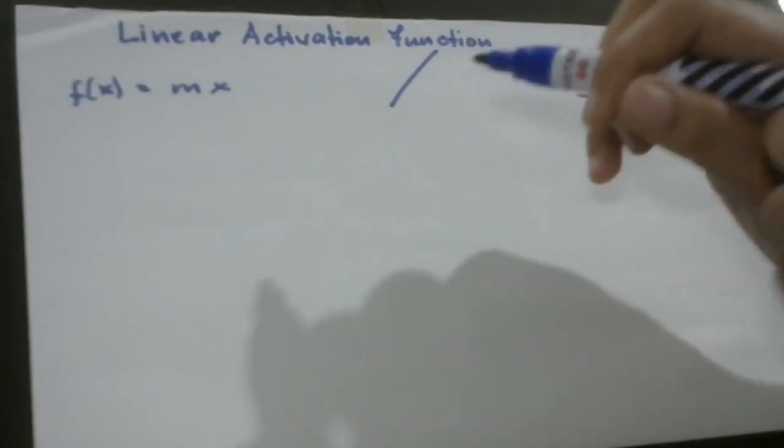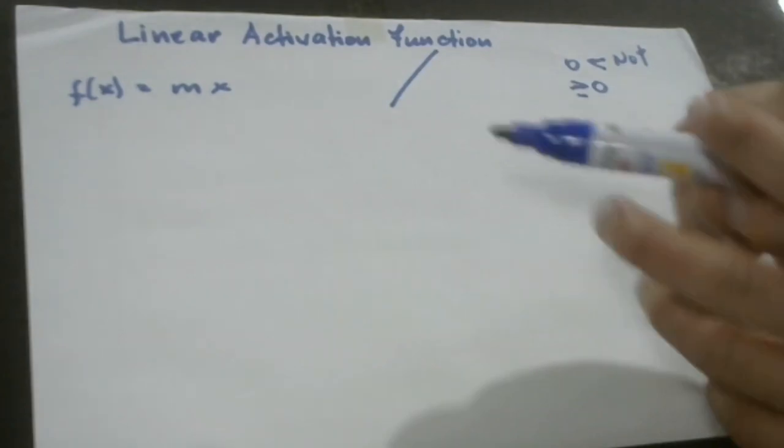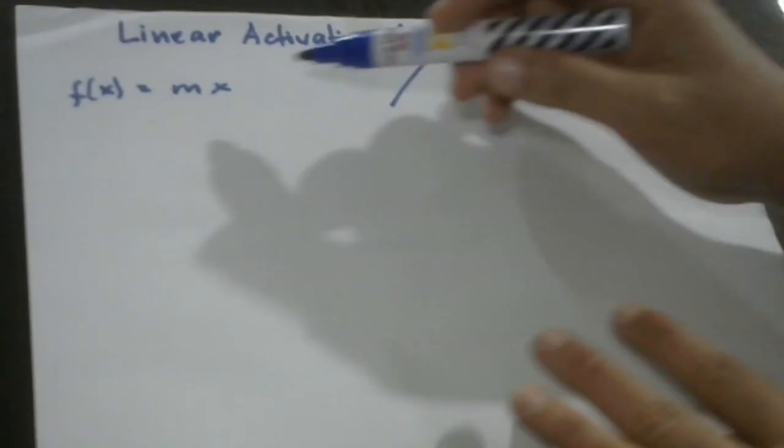Say for example, we have this function. The function of x is equal to mx, wherein m in this case is the constant.